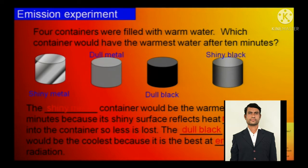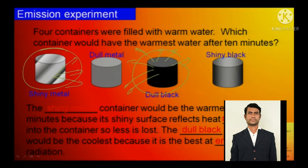The dull black container would be the coolest, because it is the best at emitting heat radiation. The shiny metal container would be the warmest because its shiny surface reflects heat radiation, it is reflecting, whereas the dull black is actually emitting the heat. So let us go to the next slide.